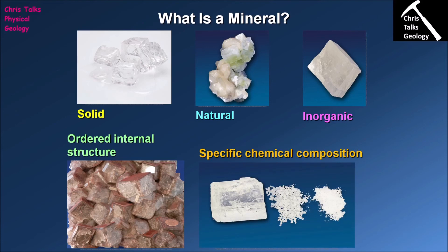The final criterion is that a mineral must have a specific chemical composition — it must be homogenous with no huge variation in its formula. Quartz, for example, has the chemical formula SiO2 and cannot vary from that. If variation is observed, it implies that multiple minerals are mixed together, making the sample heterogeneous, and they must be separated and analysed individually. These five criteria — solid, naturally occurring, inorganic, ordered internal structure, and specific chemical composition — must all be satisfied for a substance to be considered a mineral. Thank you for watching everybody and have a good day.